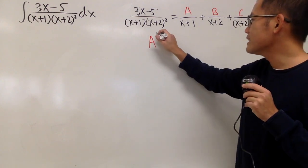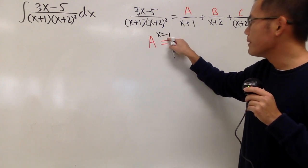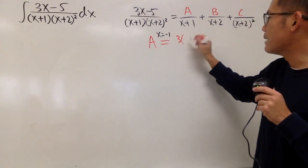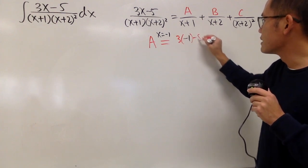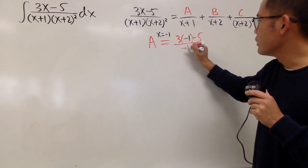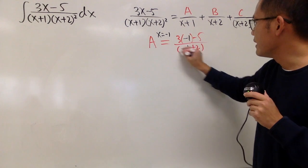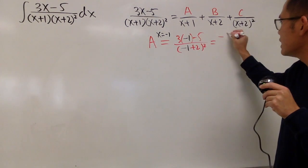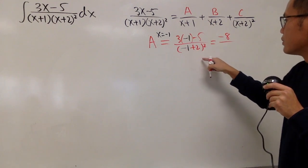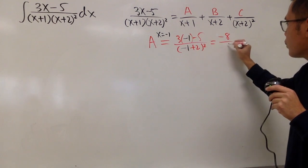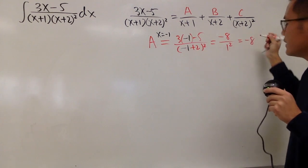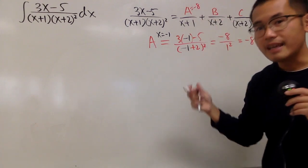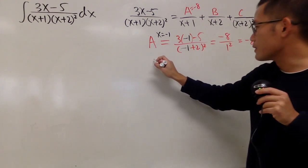So we let x equal negative 1 and plug it in. We get 3 times negative 1 minus 5, over negative 1 plus 2 squared. On top we get negative 8; on the bottom, 1 squared is just positive 1. So altogether A equals negative 8.